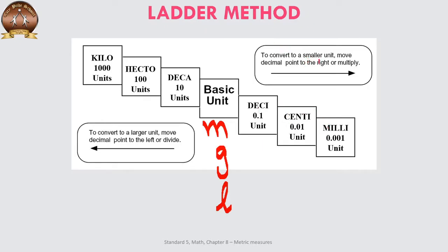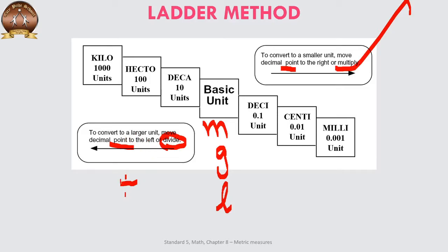To convert a smaller unit, move the decimal point to the right, or we say that we multiply. To convert the larger unit into a smaller unit, we move the decimal to the left, or we say that we divide. To convert to a larger unit we divide, and to convert the bigger unit into the smaller unit we multiply.